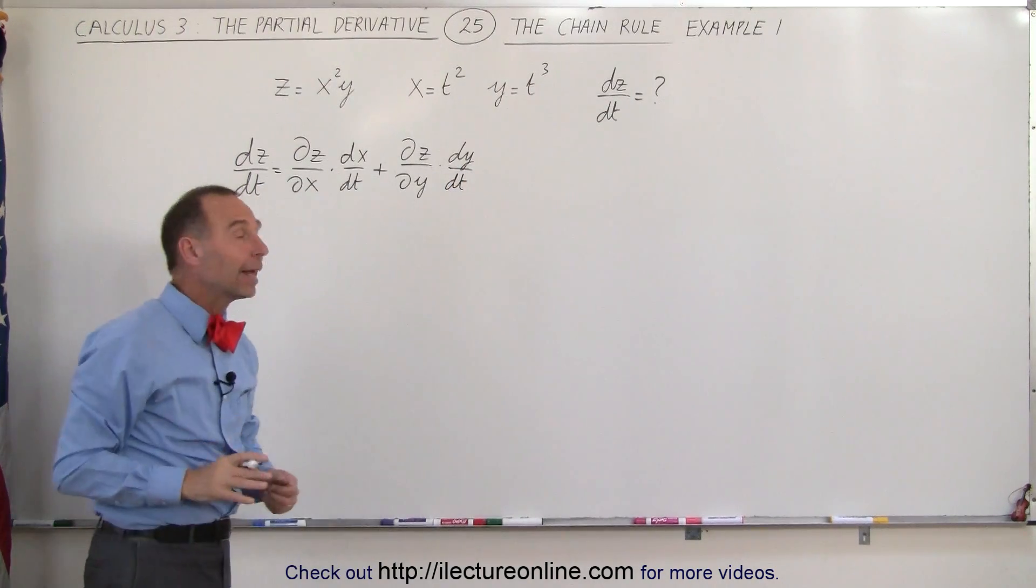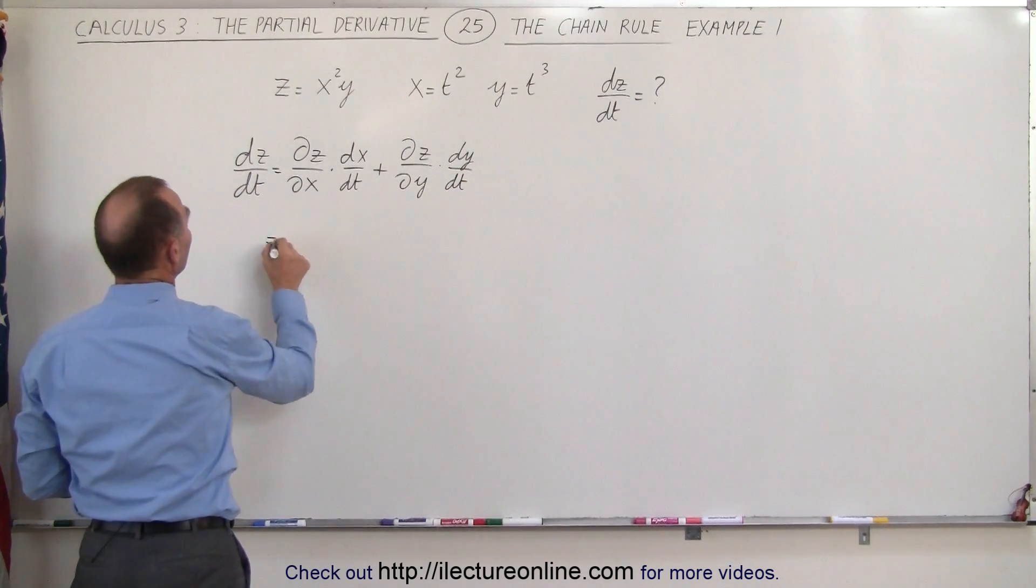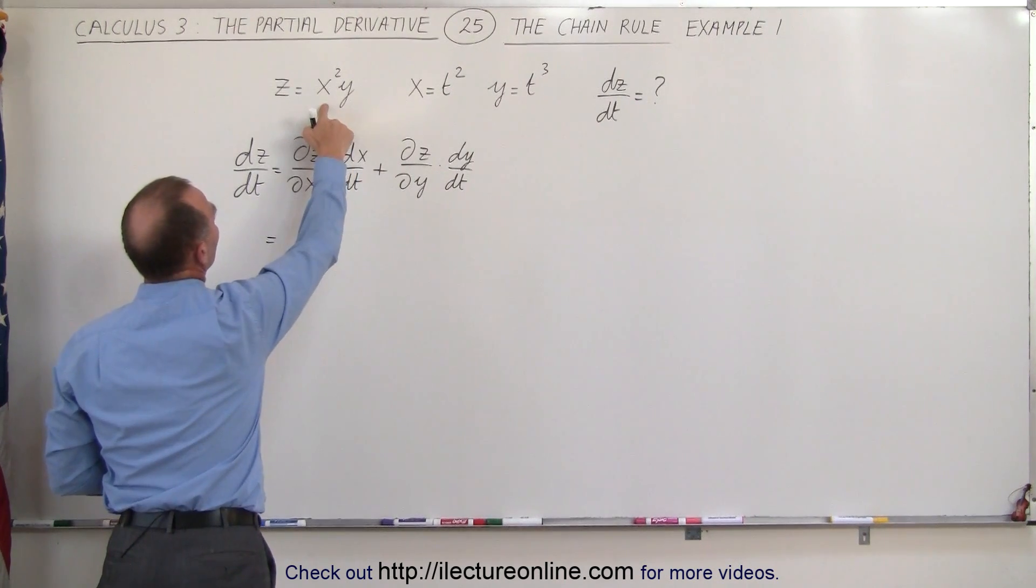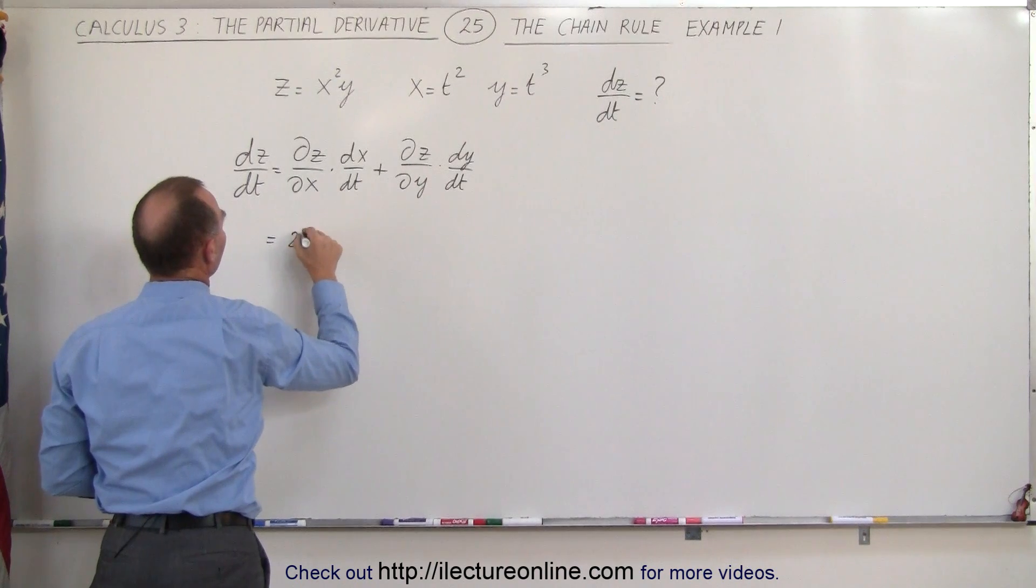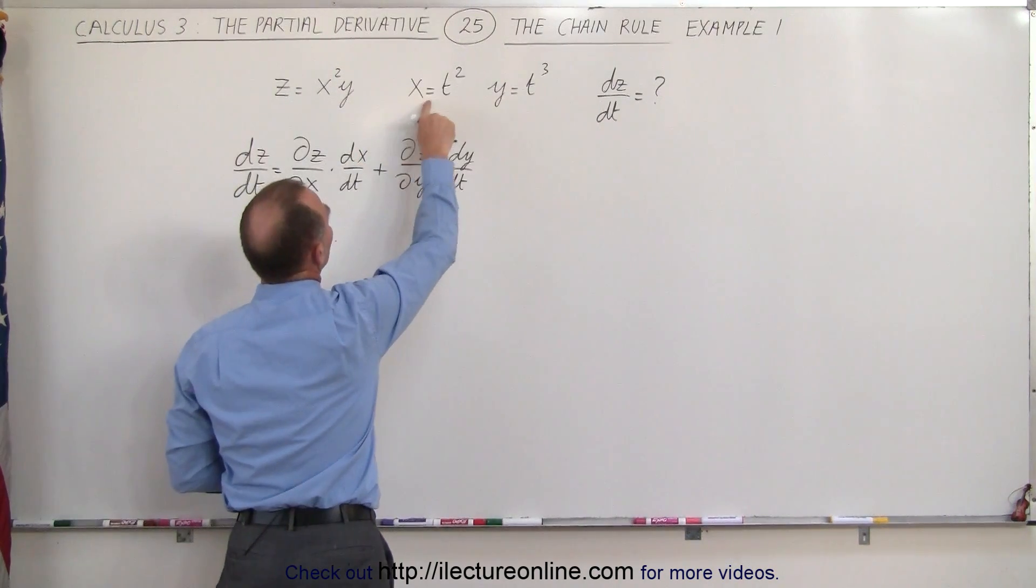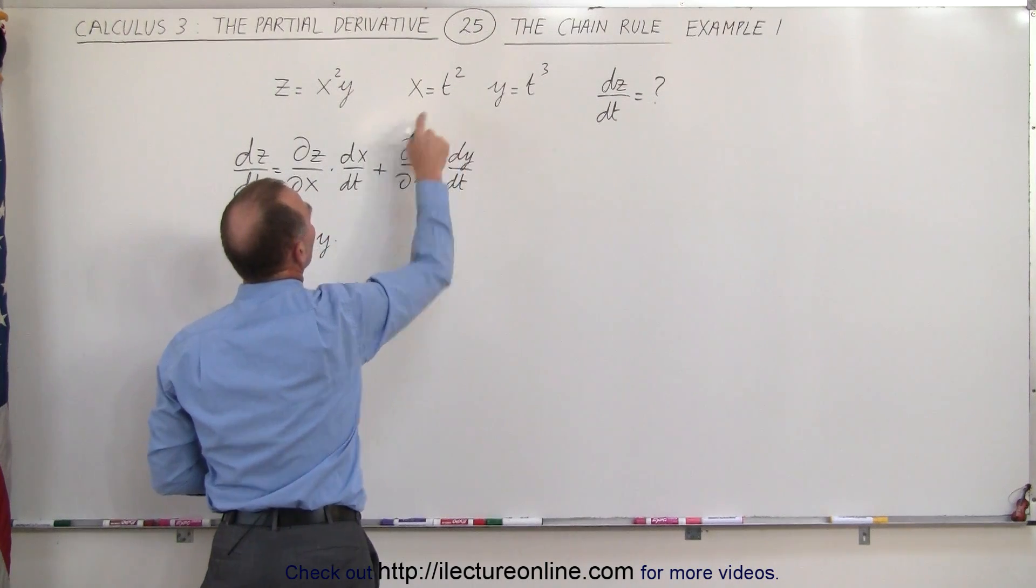Alright, let's go ahead and implement that and see what we get. This is equal to the partial derivative of z with respect to x is going to be 2xy multiply times dx dt, well x is t squared, so dx dt is 2t.